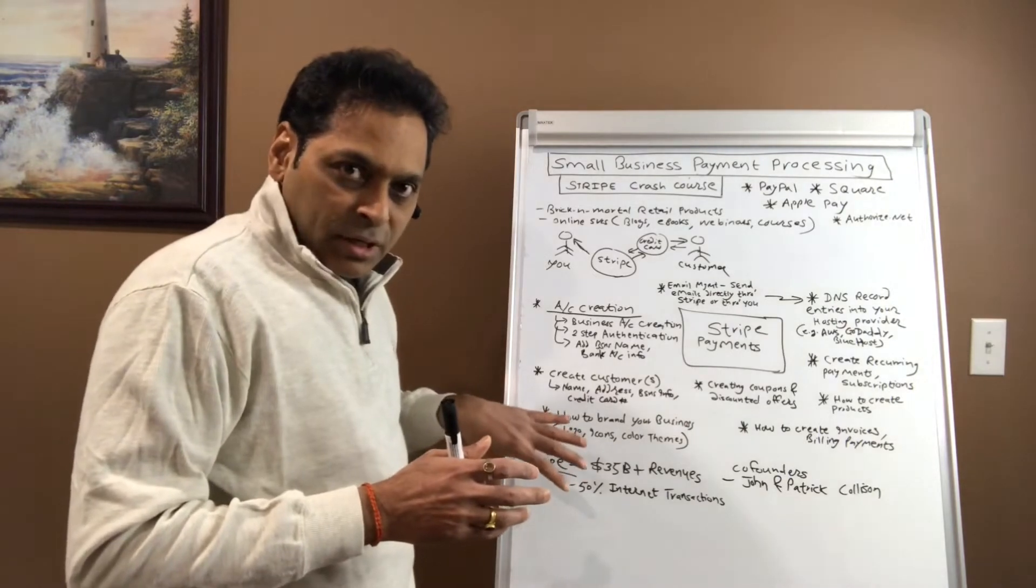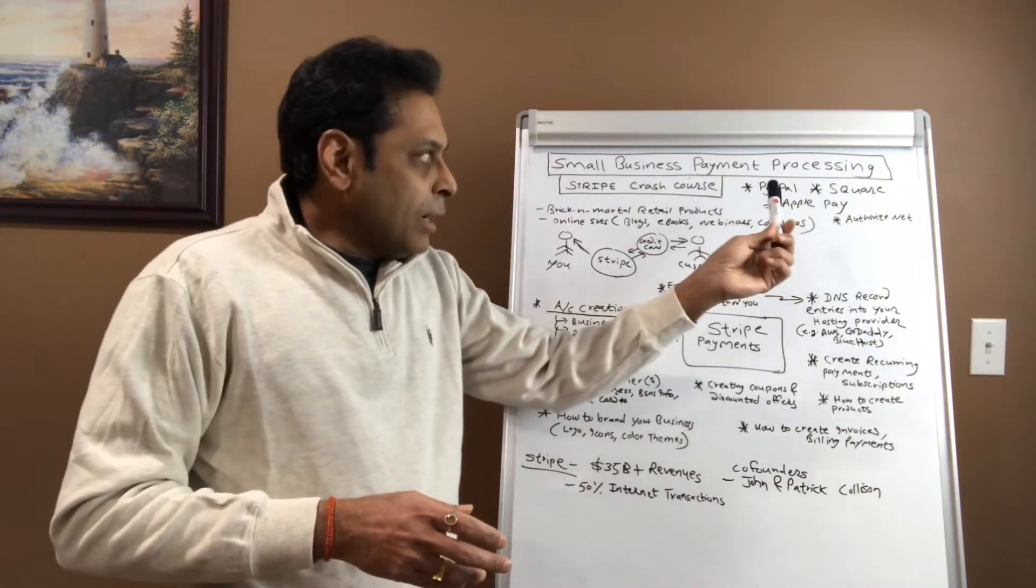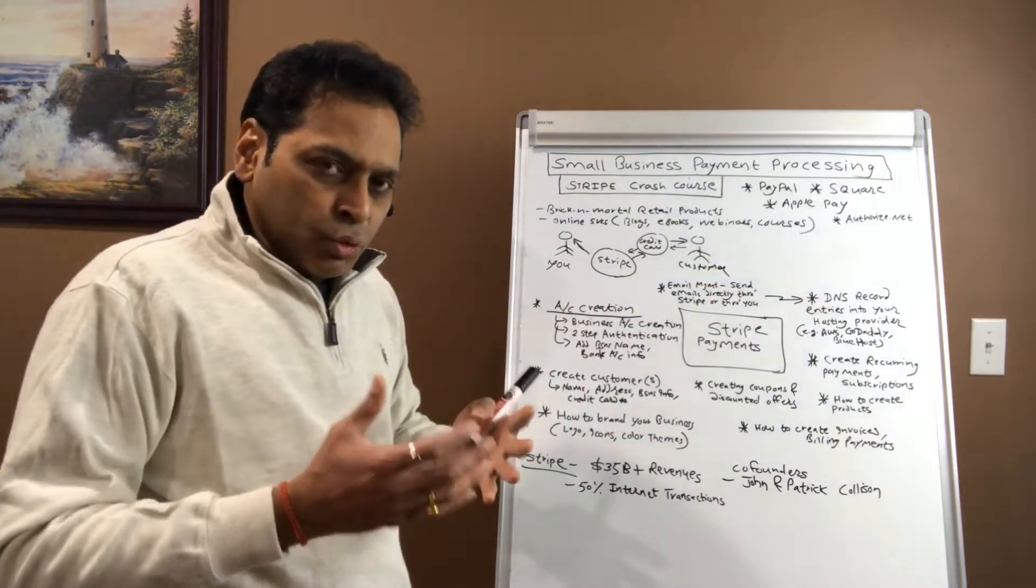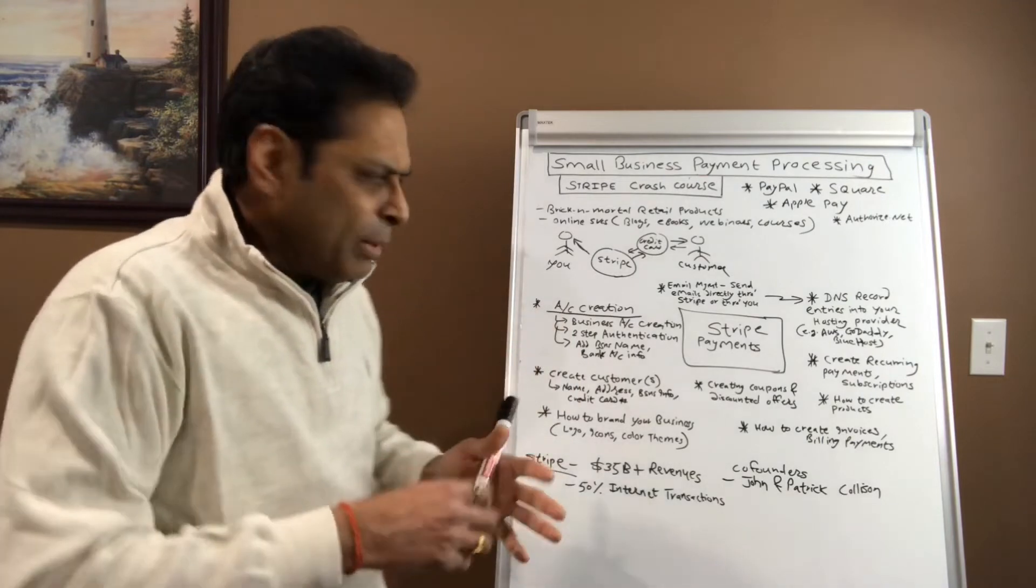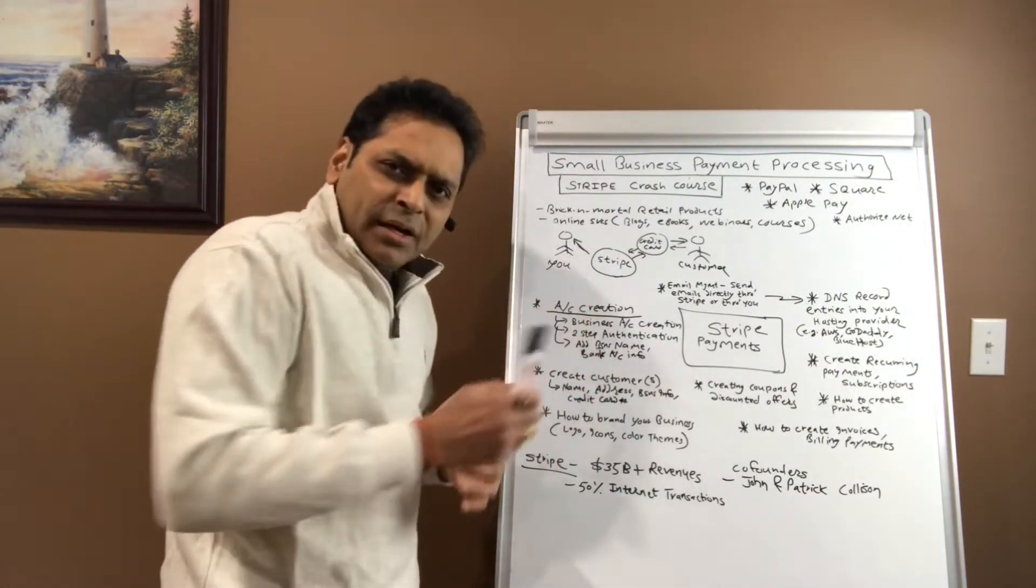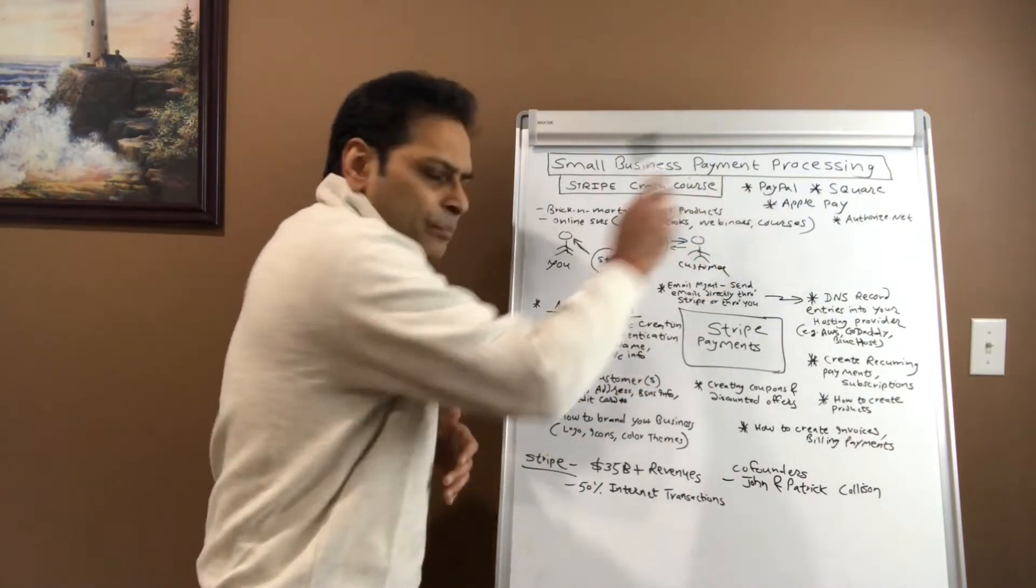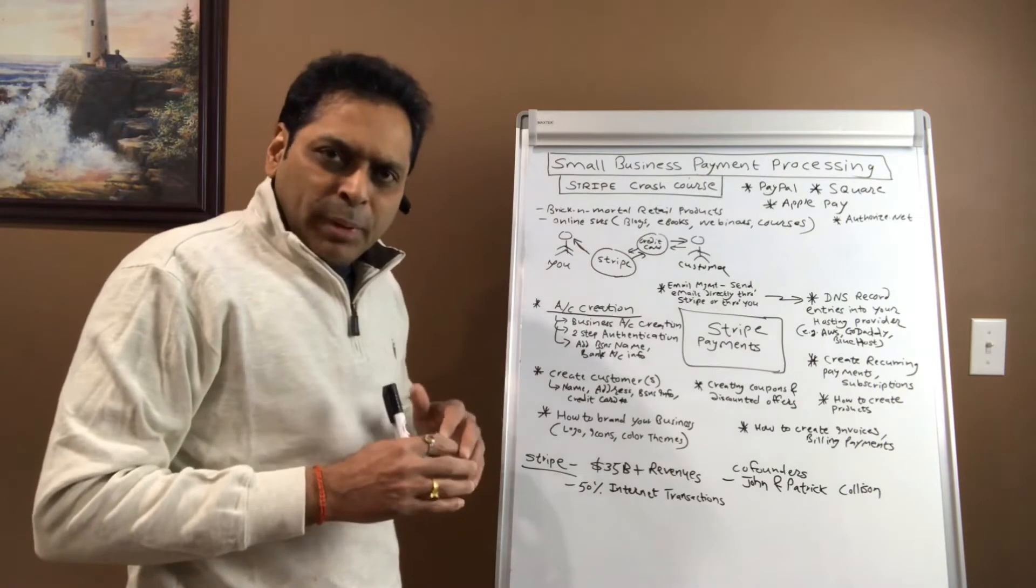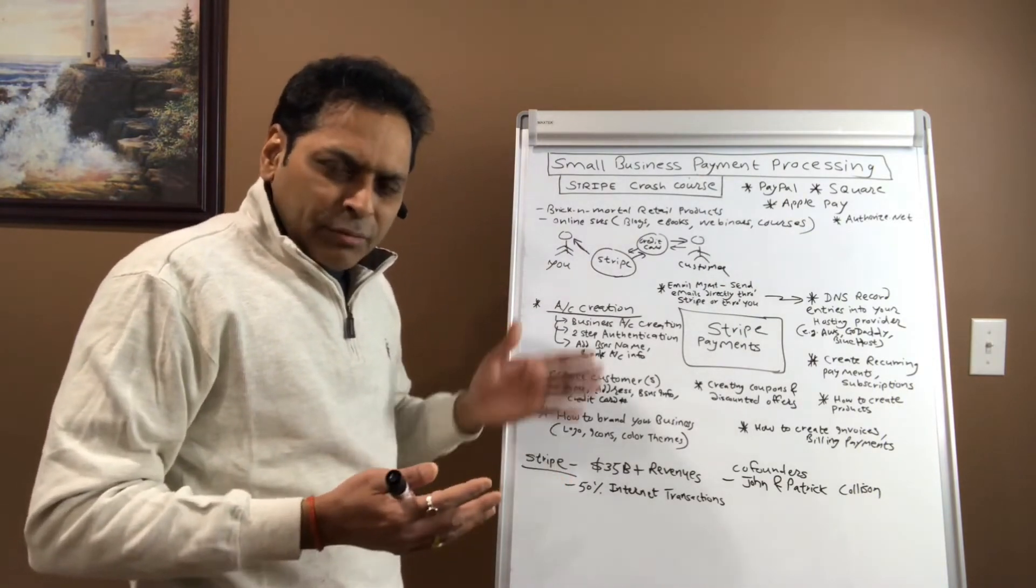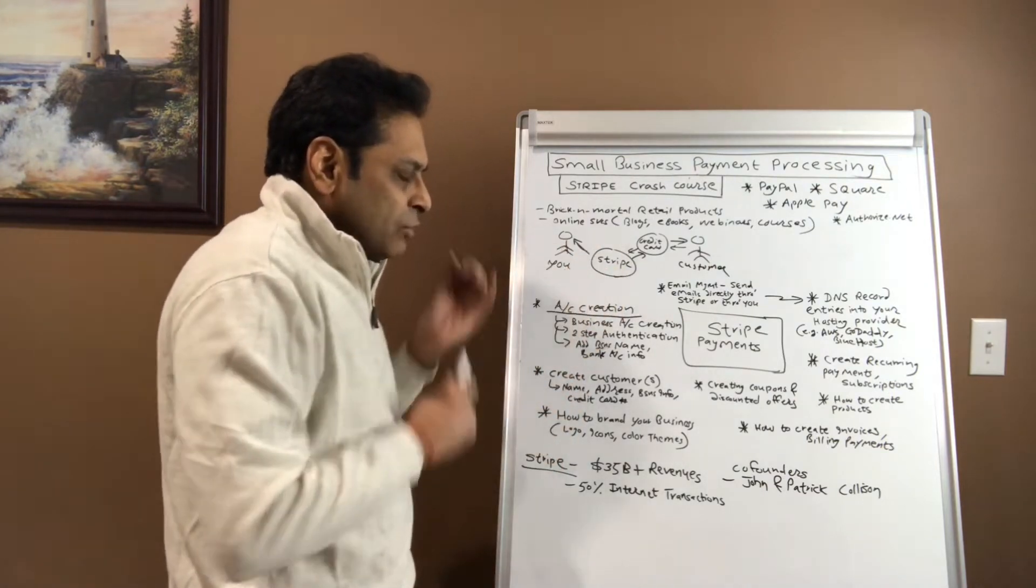You can think about PayPal, Square, Apple Pay, Authorize.net. These are all ways for you to accept payments. Stripe also fits into the same umbrella. Its transaction fees are quite compatible with PayPal. They charge 2.9% with a 30 cents transaction fee.